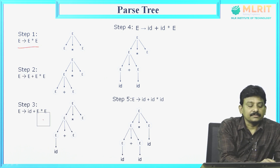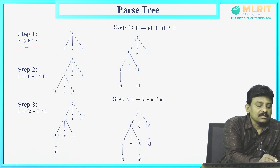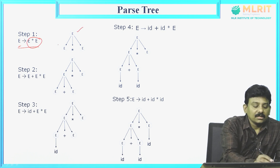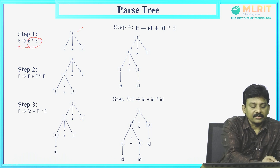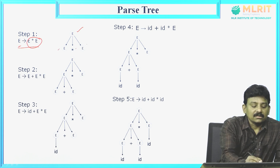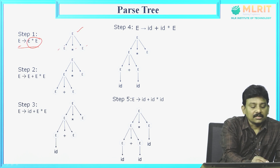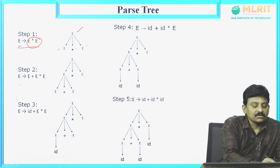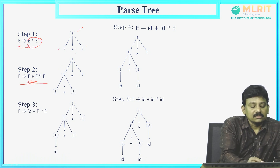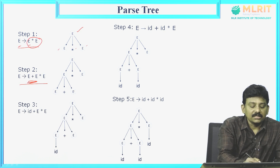E derives E star E. E star E is a sentential form. So on the left hand side we have E, which becomes the root of the tree. On the RHS we have E star E — E is a non-terminal, star is a terminal, E is a non-terminal. Star is a terminal symbol; it is not an intermediate node — we cannot replace star. Intermediate nodes, or internal nodes, can be rewritten. In the next step, E derives E plus E star E. This E is replaced by E plus E — same as E derives E star E. Plus and star are terminals, E and E are non-terminals.